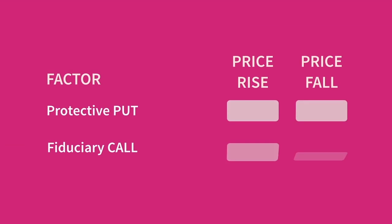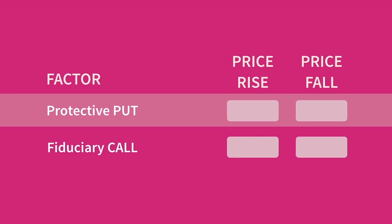So with a protective put, if the underlying price rises, the end of period value will be ST. If it falls, the value will be K, the strike price.